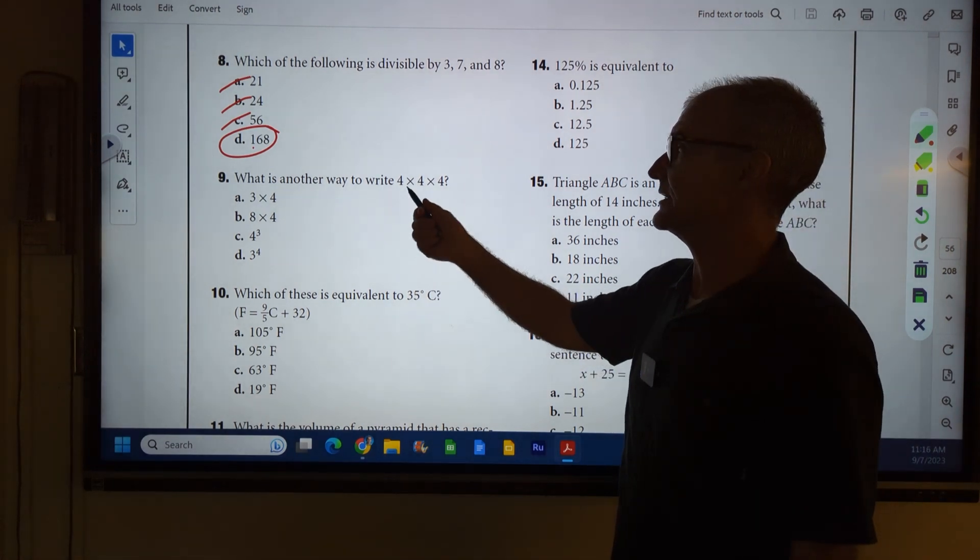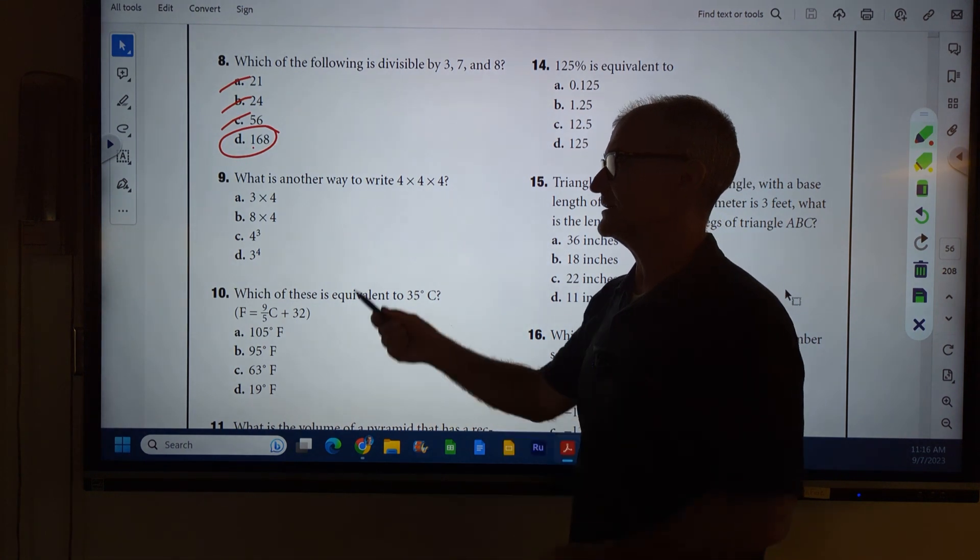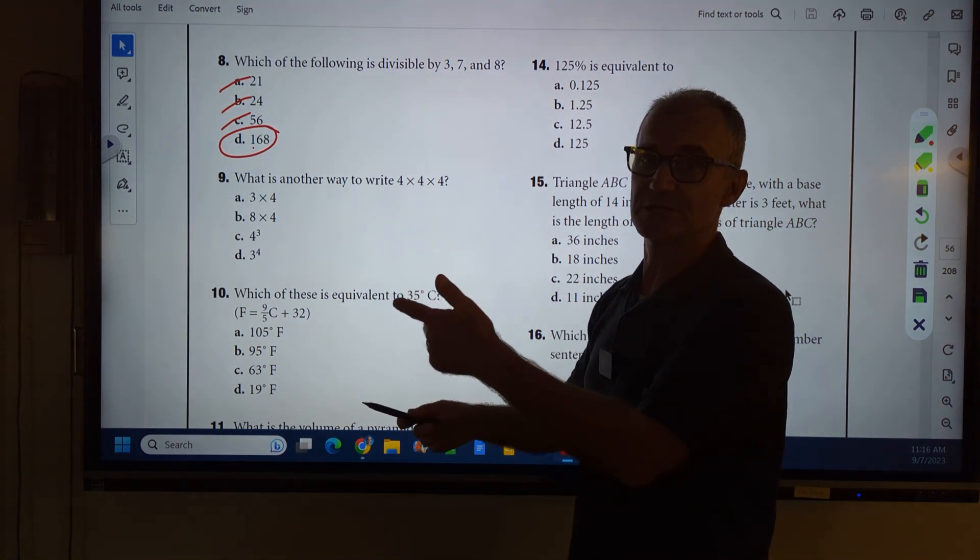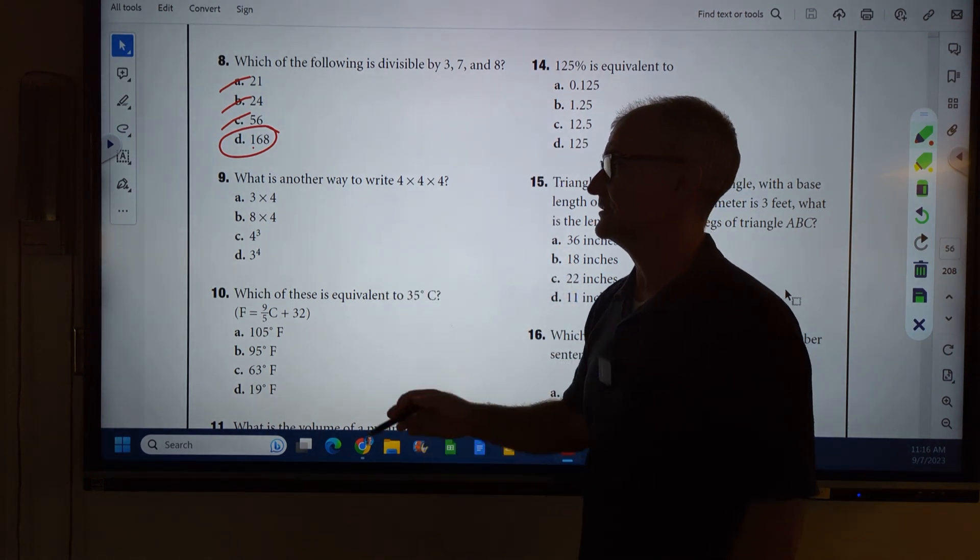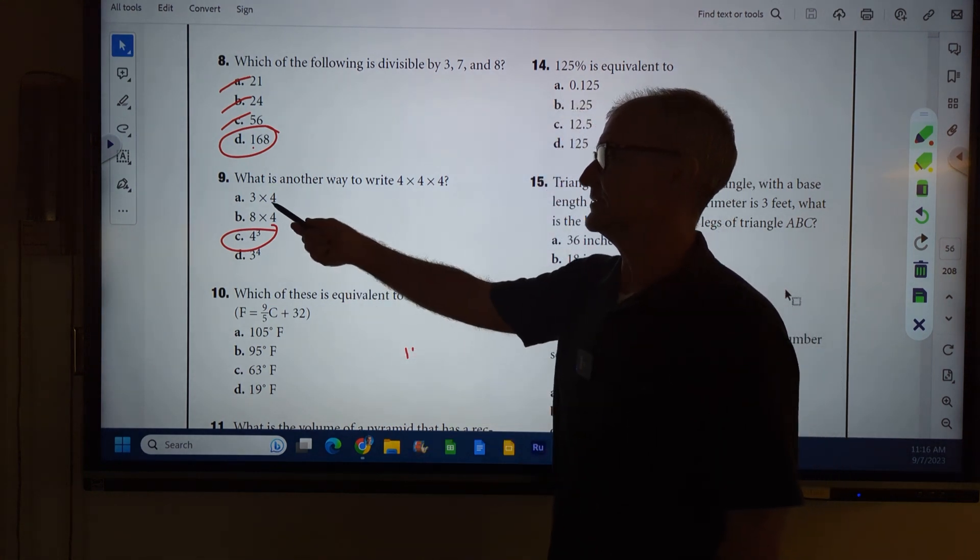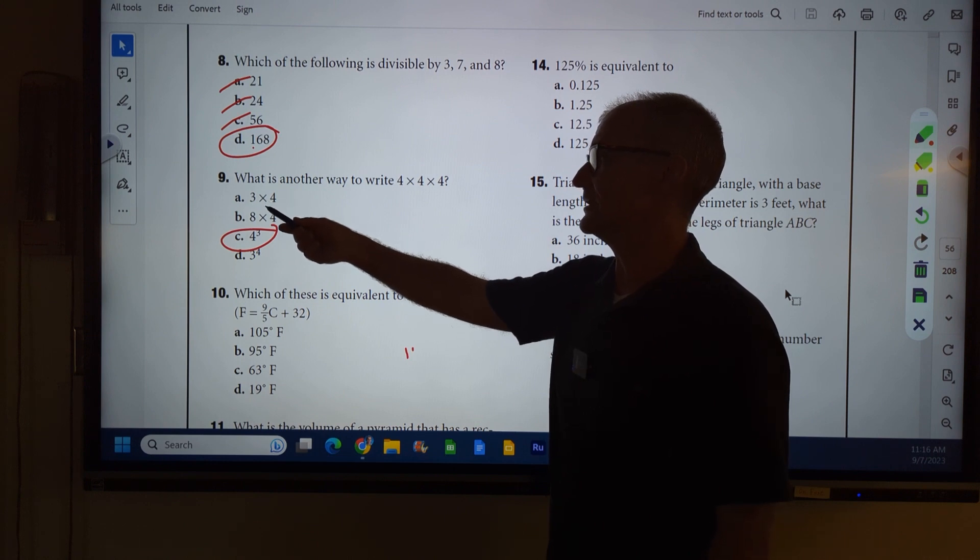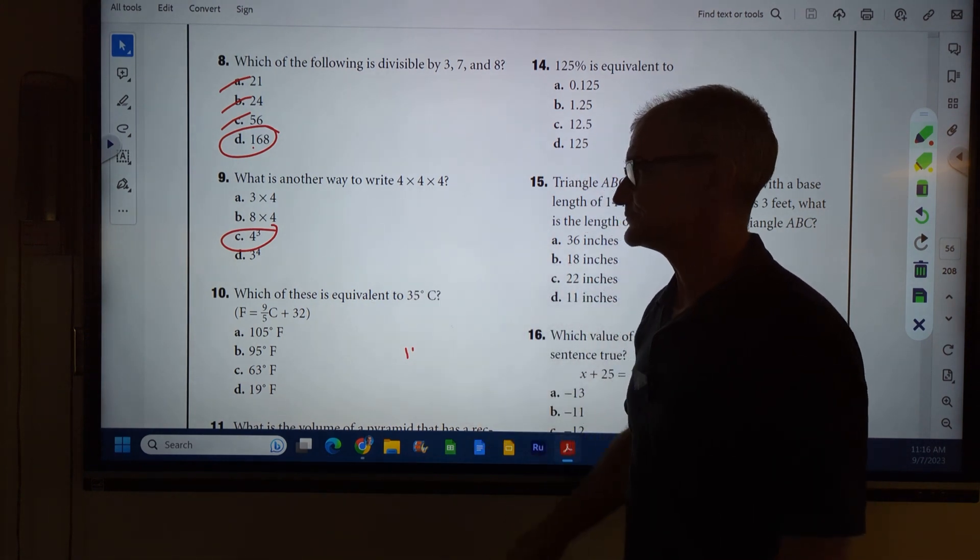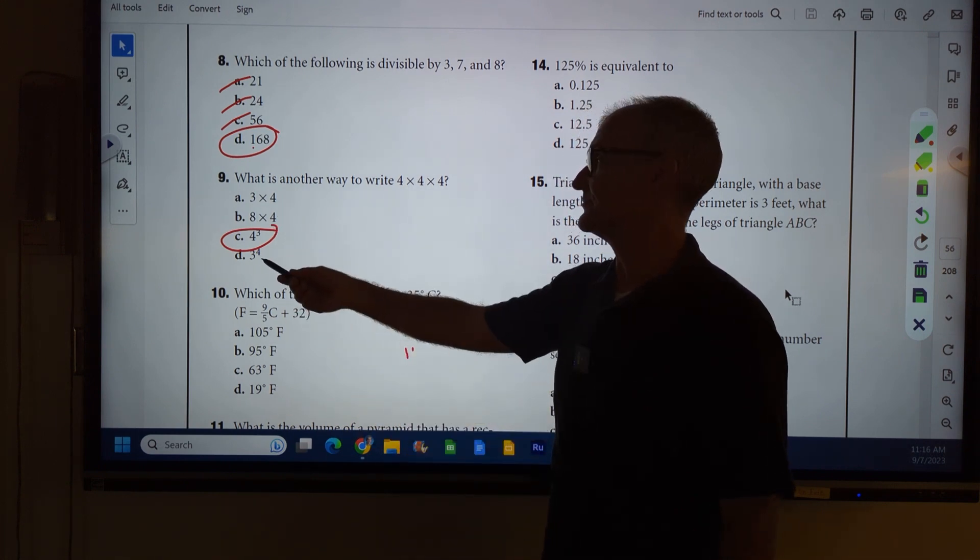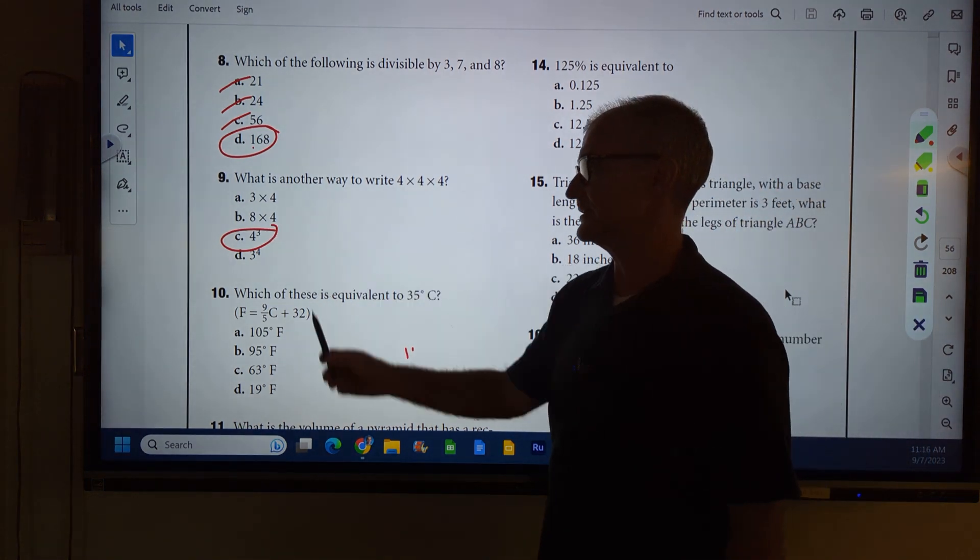Number nine, what is another way to write four times four times four? They're checking, do you know the idea of powers? So four times itself is four squared, times itself again is four to the third. Correct answer, answer C. This one doesn't make any sense, right? This is saying four plus four plus four would be three times four. That's the exact same thing as there. Doesn't make sense. And three to the fourth, well, there's three of them, so that's where that three comes from right there.